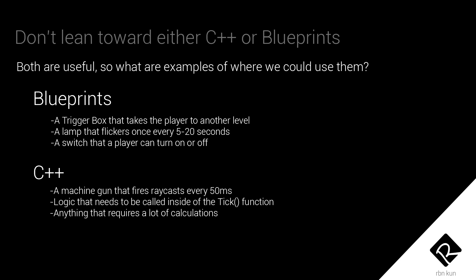Here are examples where C++ starts to make a lot of sense. First: a machine gun that fires raycasts every 50 milliseconds. For every bullet you shoot you need to cast a raycast, check if you hit anything, and execute more code based on the result. In that case it makes a lot of sense to use C++ — that requires a lot of calculation and logic, and Blueprints might not be fast enough except on a very powerful computer.